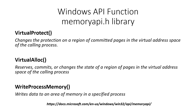Most of these functions are from the memory API.h library to bypass DEP. These functions include VirtualProtect, which changes the protection of a region of committed pages in the virtual address space of the calling process, and VirtualAlloc, which reserves, commits,